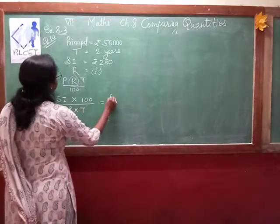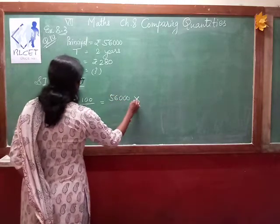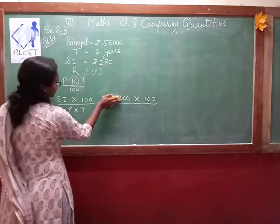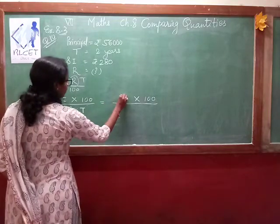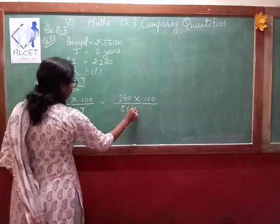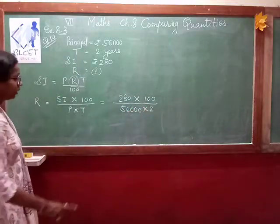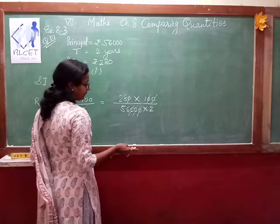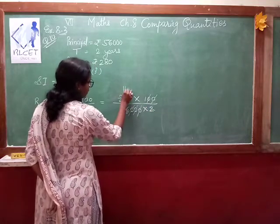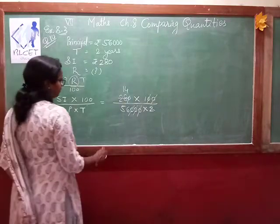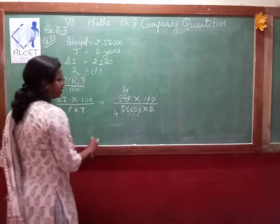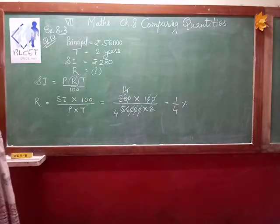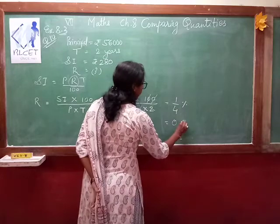Now substitute the values. Simple interest is 280, multiplied by 100, divided by principal 56,000 multiplied by time 2. After cancellation — zeros cancel, 14 into 4 gives 56 — the answer is 1 divided by 4 percent, which is 0.25 percent. So the rate of interest is 0.25 percent.